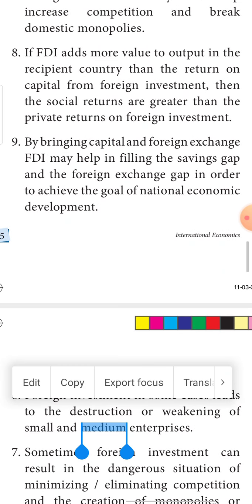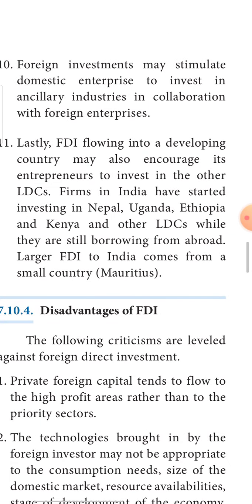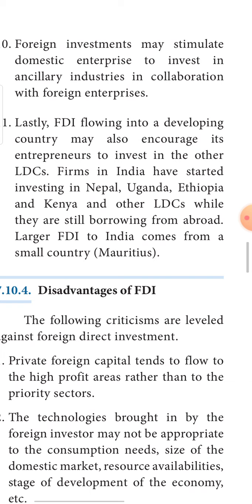Eighth, FDI adds value to the output of the recipient country. For the home country, capital gives good returns. For example, if the USA invests in India, USA gets good returns, while India uses the FDI to increase its volume of goods and services, growing its GDP. Ninth, FDI helps in filling the savings gap and foreign exchange gap — by increasing income, savings also increase, bridging the gap between capital flow and savings.